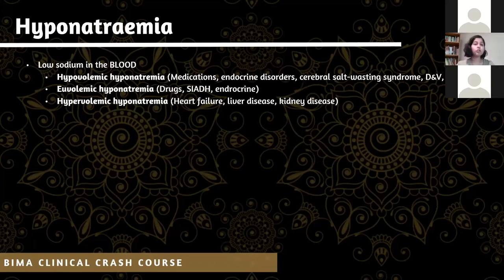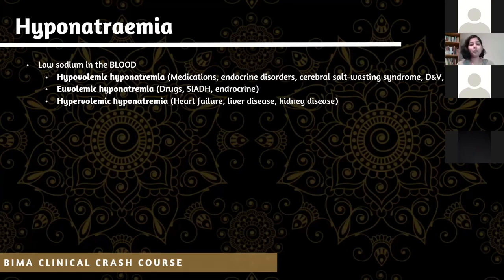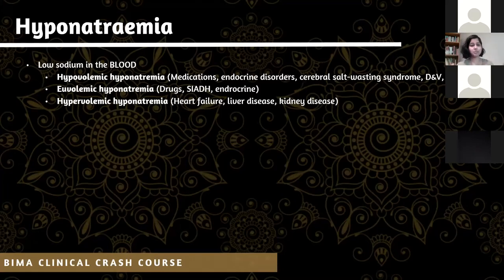The second is euvolemic hyponatremia — where body volume is preserved but we're only losing sodium. Our water levels are the same but sodium is diluted, typically when we have syndrome of inappropriate ADH production and are absorbing too much water. Then we have hypervolemic hyponatremia, which happens in heart failure, kidney failure, and liver disease, where volume leaks into the third space — you'll see really puffy patients with low serum sodium.